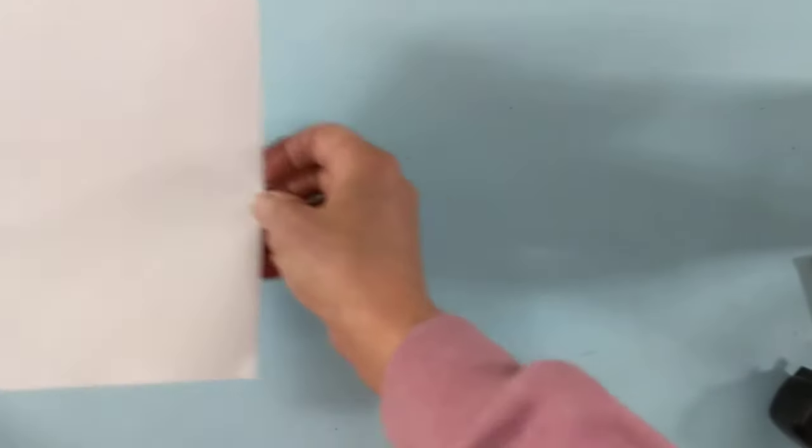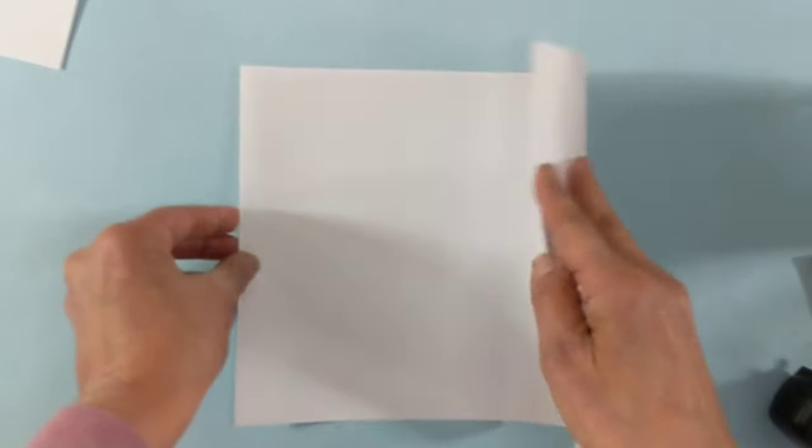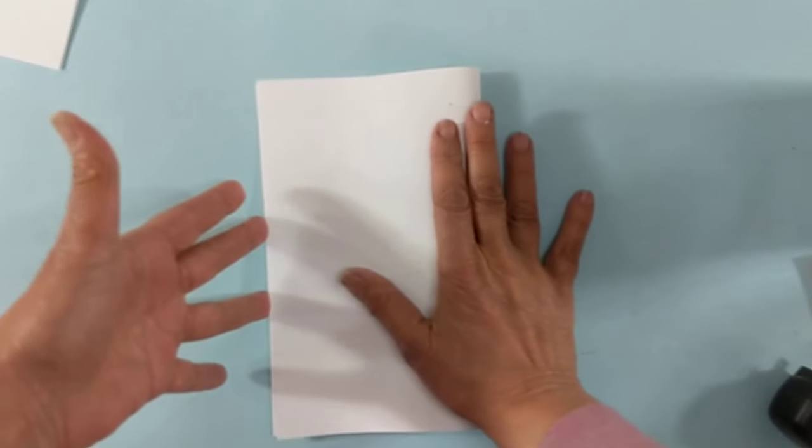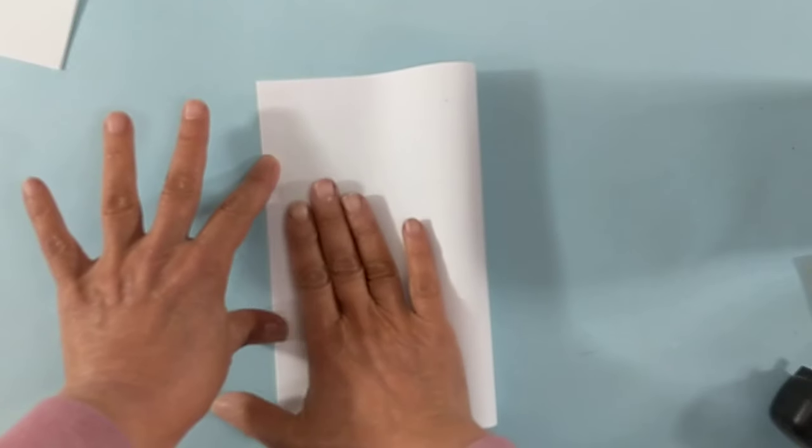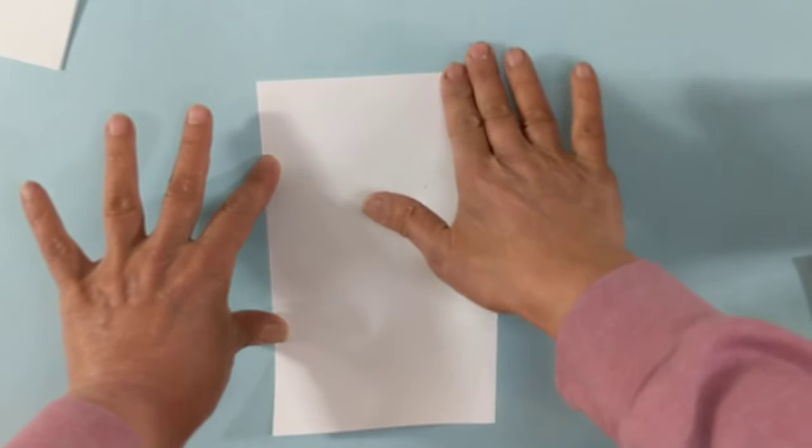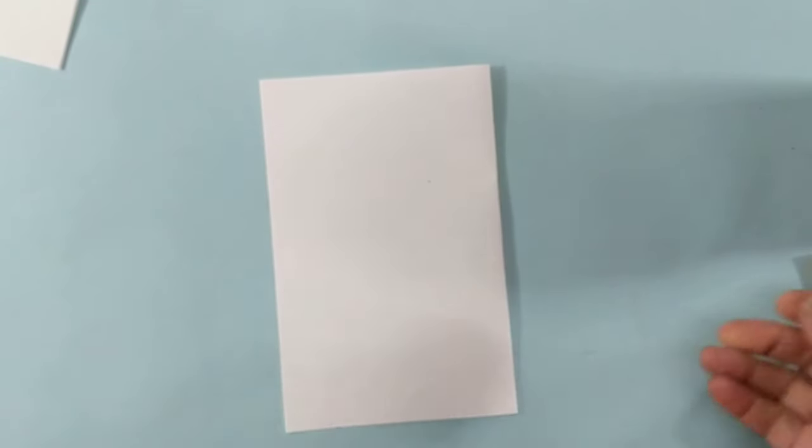So those steps again are keep it flat on the table, make a backstop, hold tight with one hand, slide with one hand, slide with the other. Go up and down. Ta-da!